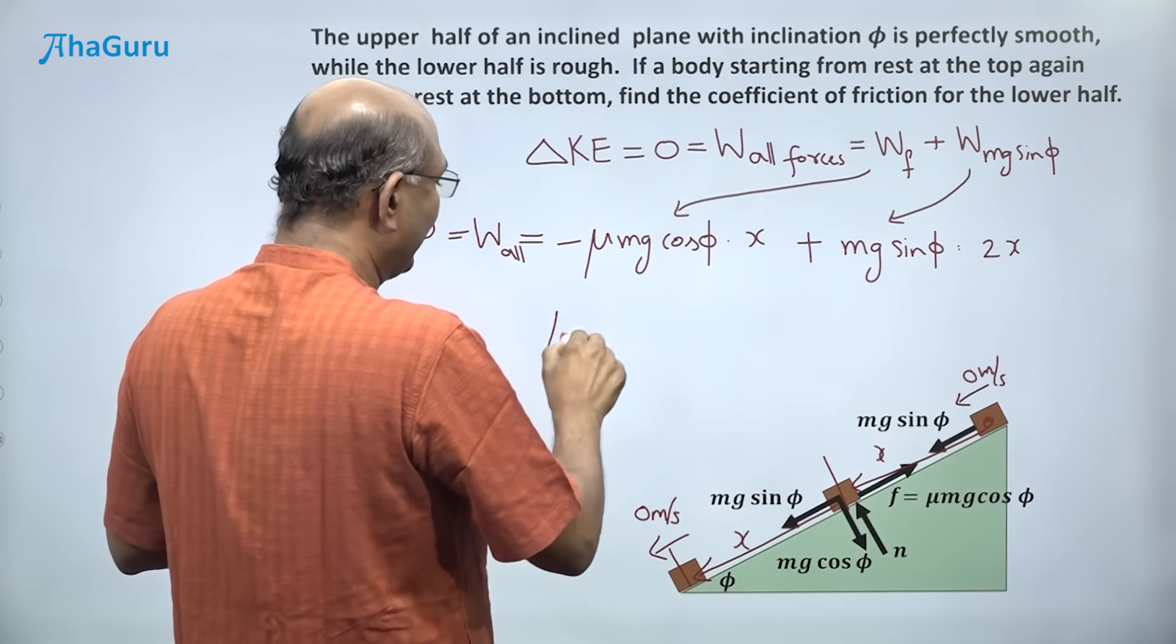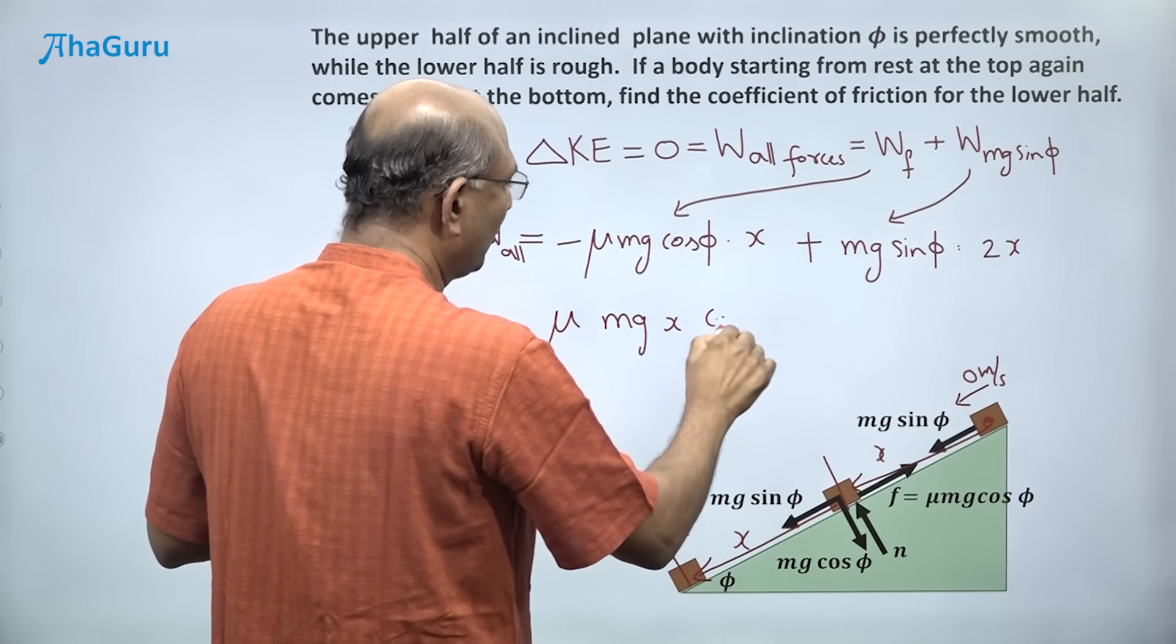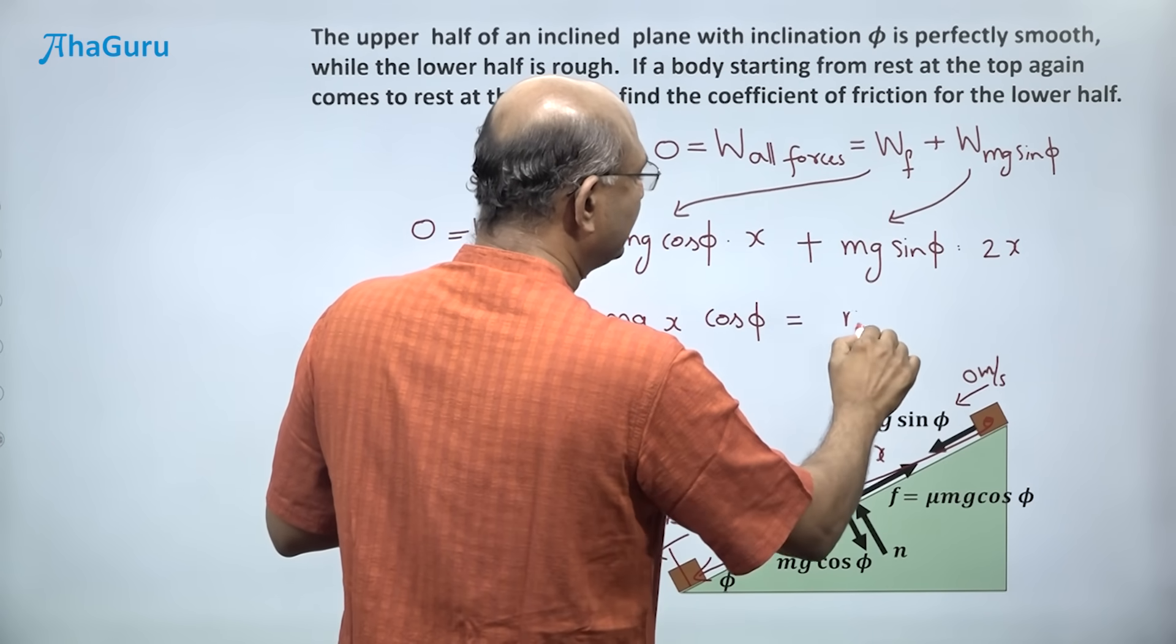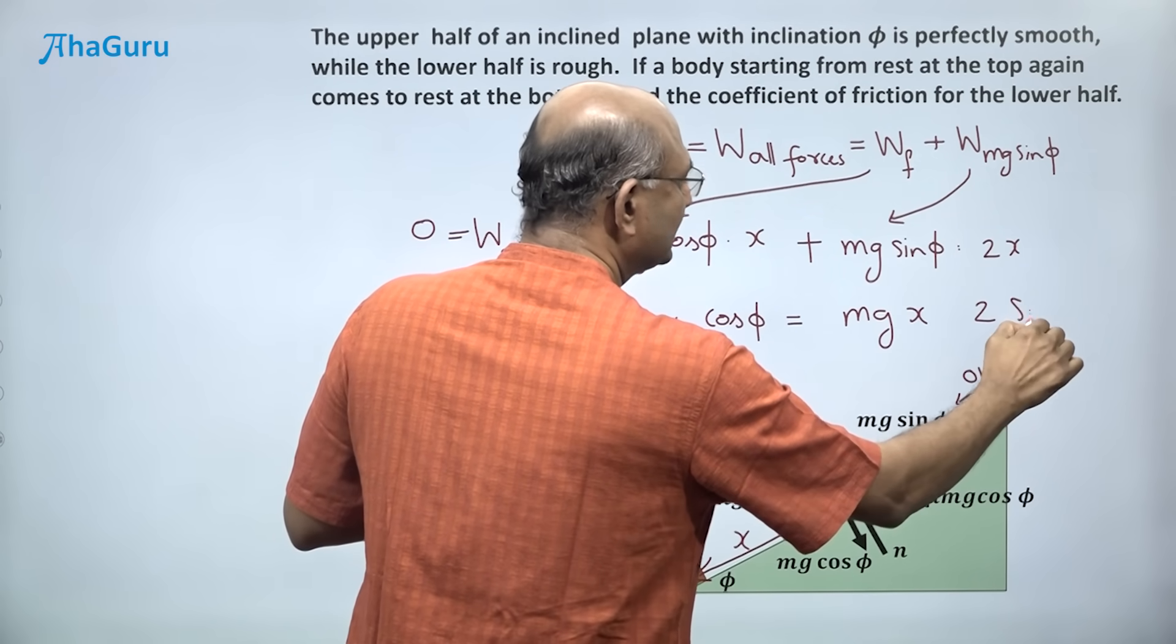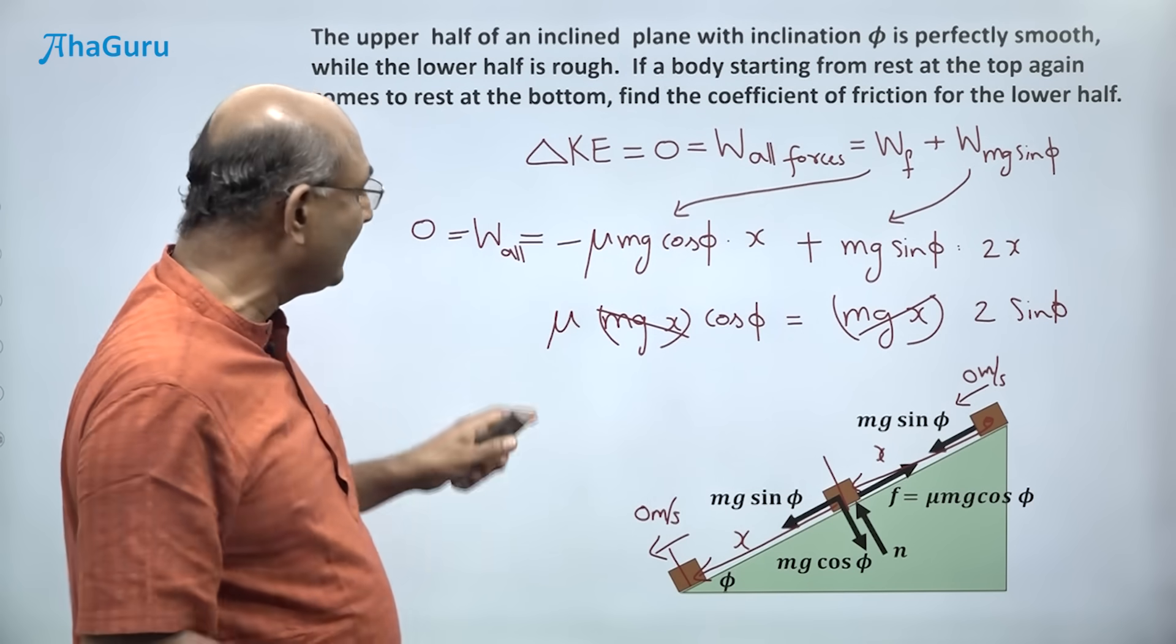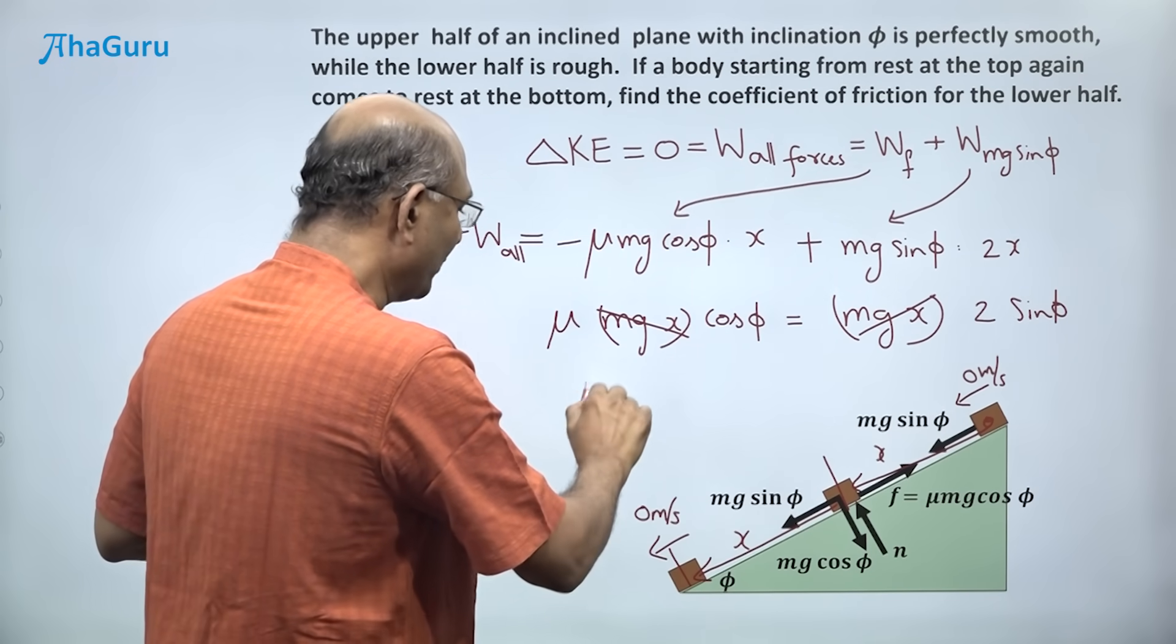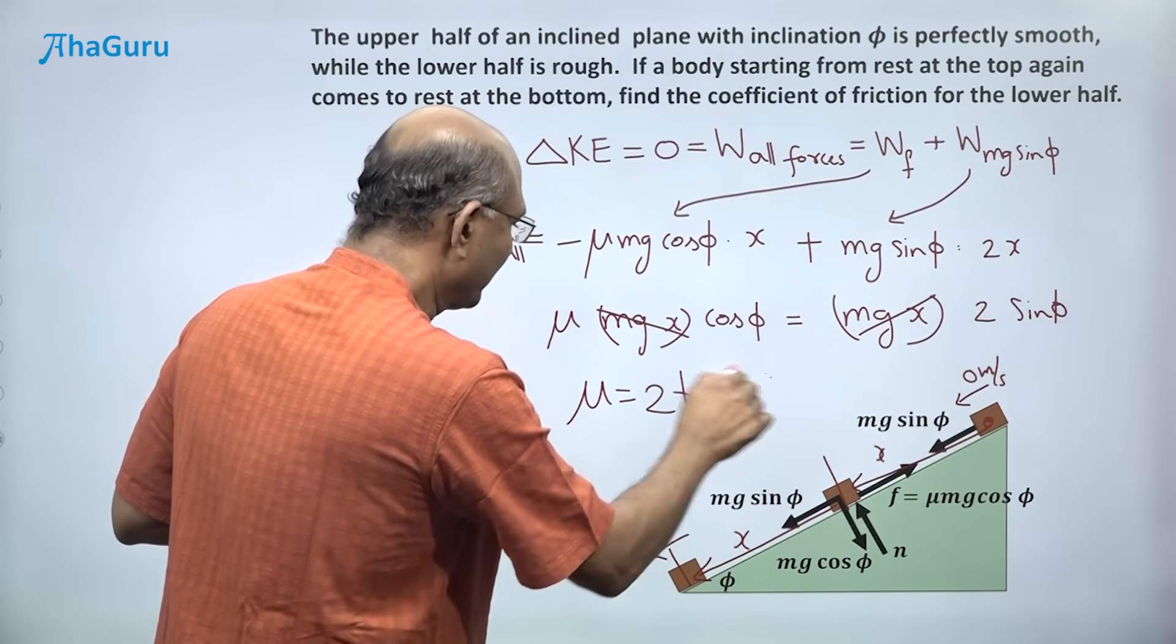So if I bring it here, I can write mu times mg, I'll write x next to it, cos phi is, that is mg x into 2 sin phi. So notice that there is mgx here, there is mgx here, which I can cancel. So mu is 2 sin phi by cos phi. Mu is 2 times tan phi.